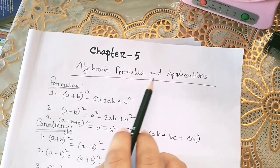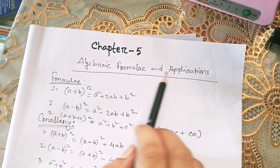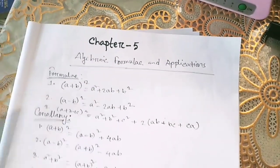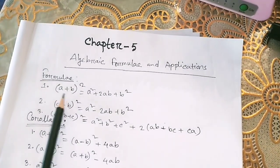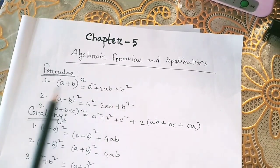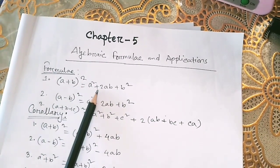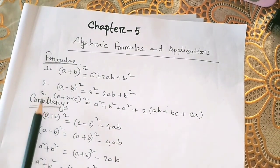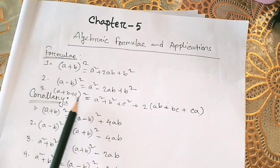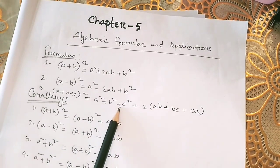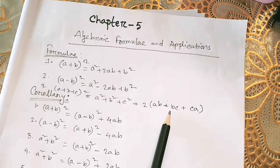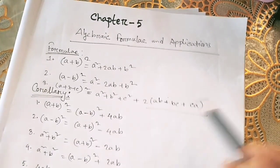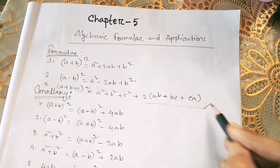In this chapter we have to know some formulae and some corollaries. There are only 3 formulae: the first is (a+b)² = a² + 2ab + b², the second is (a-b)² = a² - 2ab + b², and the third is (a+b+c)² = a² + b² + c² + 2ab + 2bc + 2ca. We have to know only these 3 formulae for this chapter.